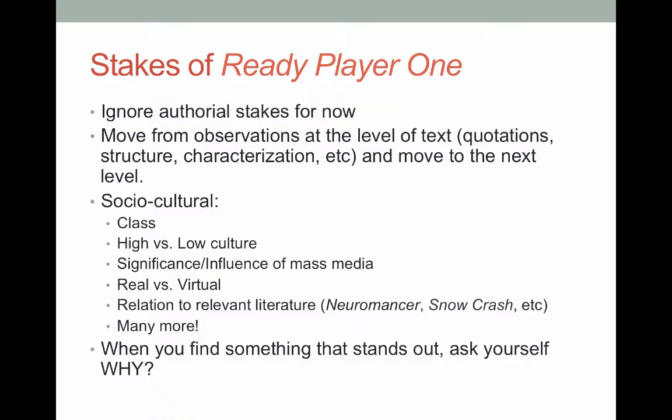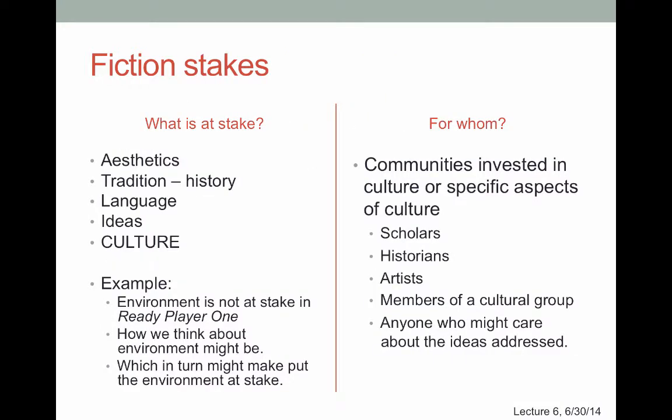Last time we talked about the stakes of Ready Player One, and I showed you a slide listing sociocultural stakes brought up in the first couple pages: class, high versus low culture, significance versus influence, mass media, real versus virtual. One of the challenging things about writing about fiction is that obviously it's not real. So when you're talking about what's at stake in Ready Player One for the issue of class, the story is made up — so does it tell us anything about class at all? What can it actually tell us, given that it's not a study of inner-city Chicago or something like that? So what are the stakes of fiction, or how do we think about what's at stake in fiction?